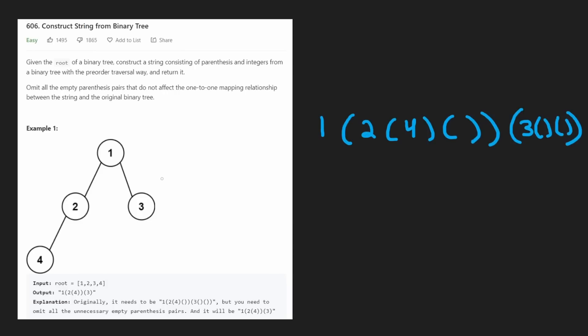Now, the thing here is they say we want to omit all empty parentheses pairs that don't affect the one-to-one mapping relationship between the string and the original binary tree. The first time I read this problem, I read it as we just want to eliminate all the empty parentheses. So in this case, our solution, we could take this entire string, get rid of this pair of parentheses, get rid of that pair, and get rid of this pair.